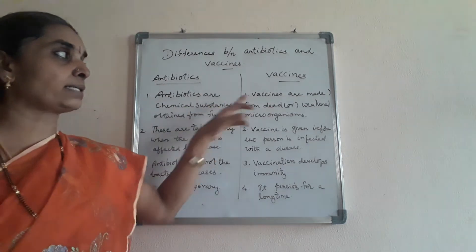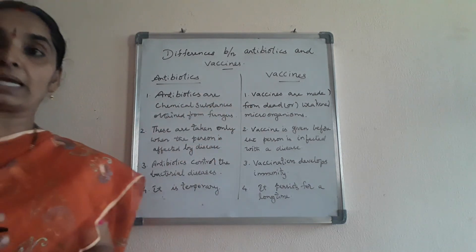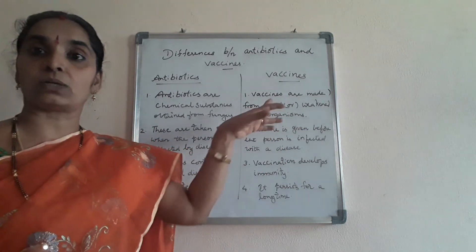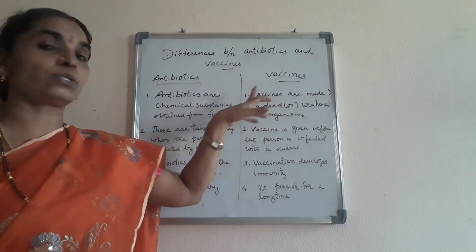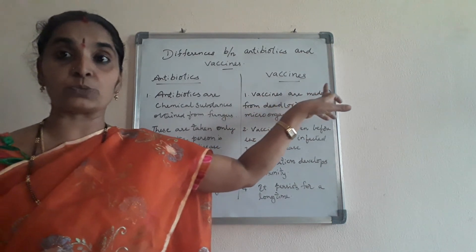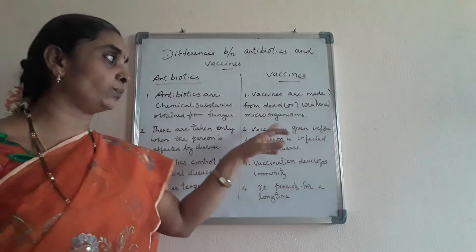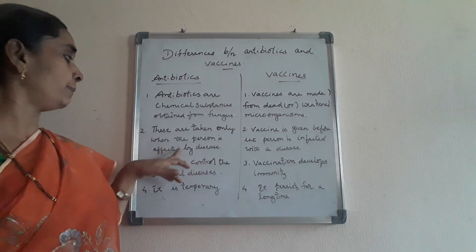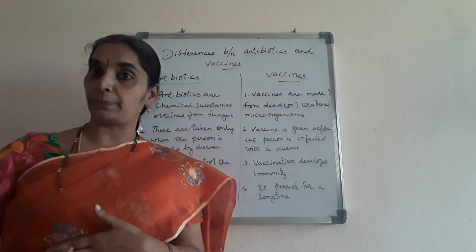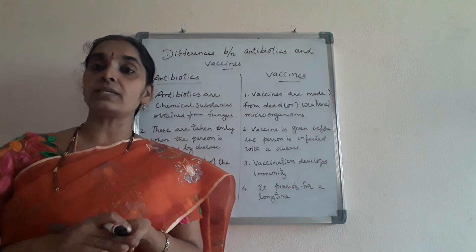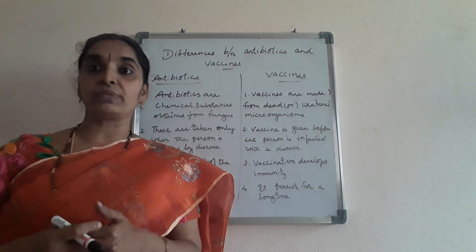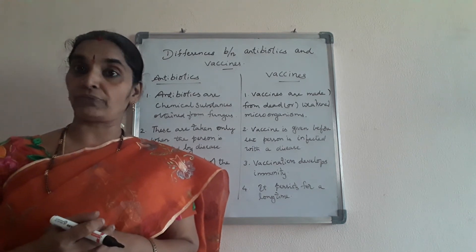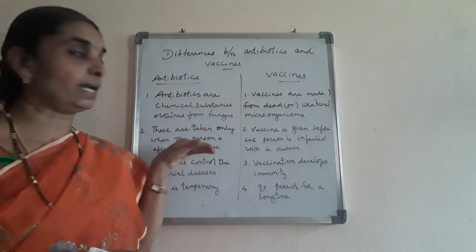Vaccines are made from dead and weakened microorganisms. The first vaccine was developed by Edward Jenner — the cowpox vaccine — and the name 'vaccine' comes from 'Vaca' meaning cow. Antibiotics are taken only when the person is affected by the disease — when you suffer from the disease and go to the doctor, he prescribes antibiotics, which should not be used without a doctor's prescription.